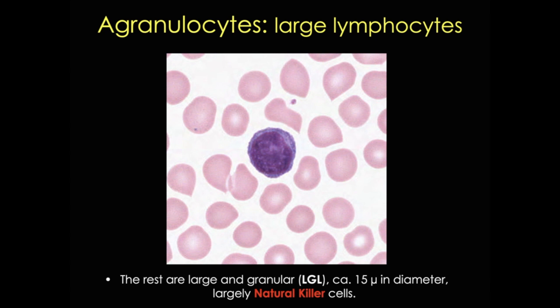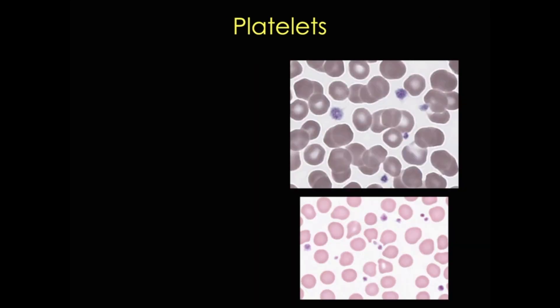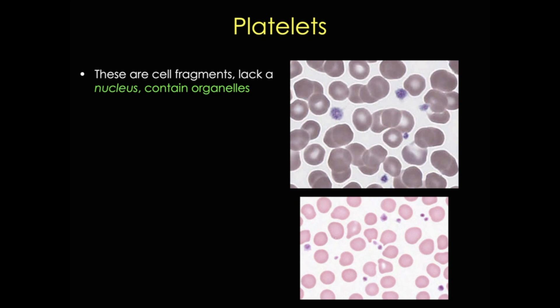So that's it for the white blood cells. The last blood component I'd like to talk about is the platelet, or thrombocyte. Platelets aren't actually cells, but very small non-nucleated membrane cell fragments, sometimes called formed elements. They often look like specks in a blood smear or even small clumps, but an individual platelet is a discoid shape.